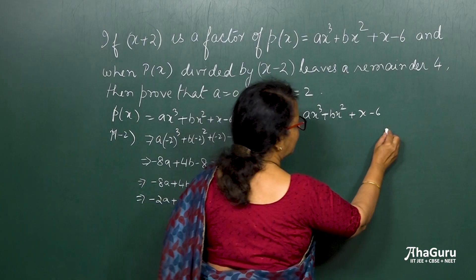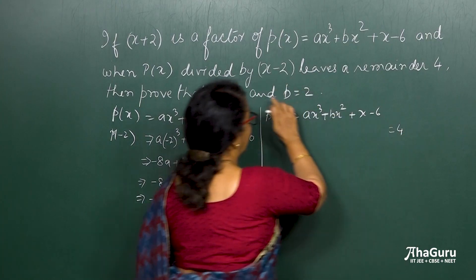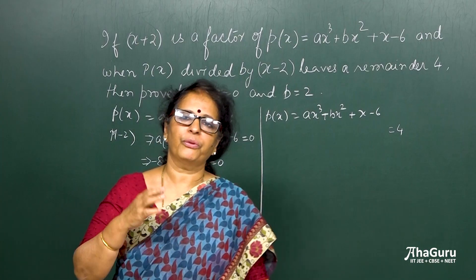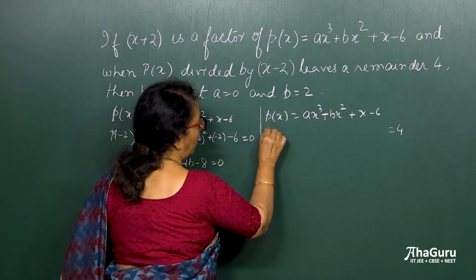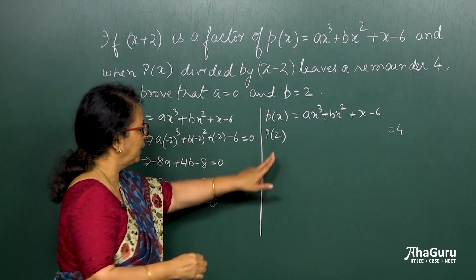So obviously this will be equal to 0 when I put x minus 2 equals 0, and p of x, which is p of 2. So if I find p of 2, see the difference between here and here.